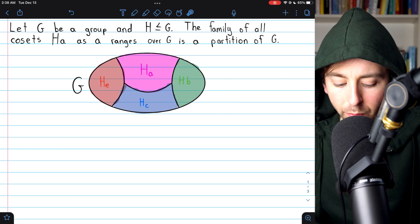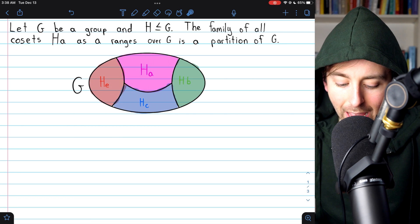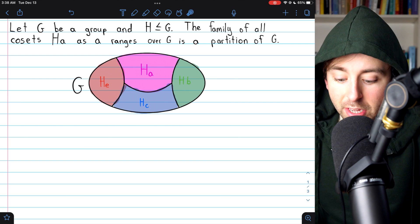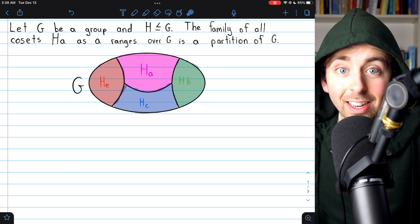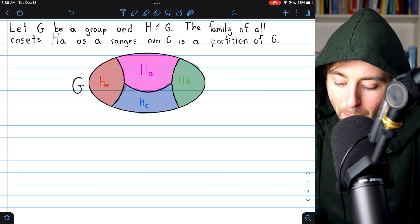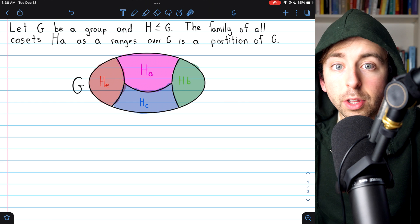Then, the family of all cosets Ha as A ranges over G, so just all the cosets of this subgroup H in the containing group G, all of these cosets make a partition of the group G.